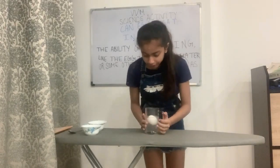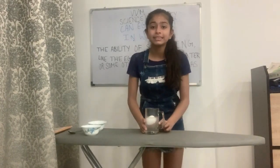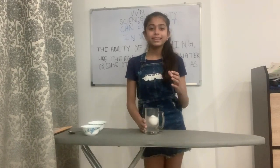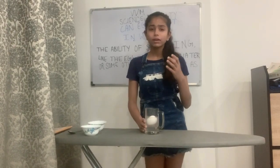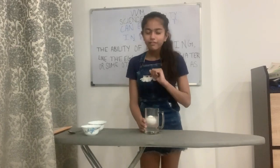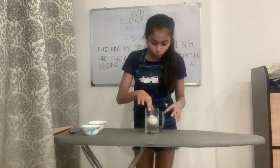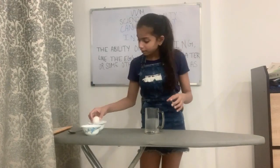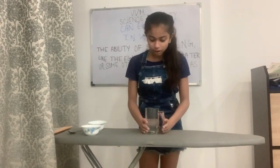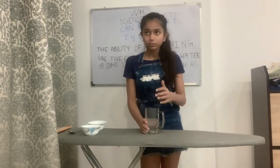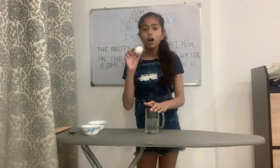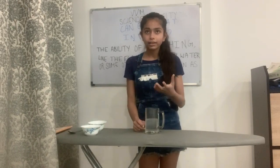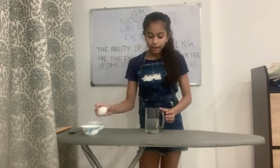Adding salt into the water increases the mass of the liquid without increasing the volume very much. Adding salt in the water also made the density of the water higher than the density of this egg. That is why the egg started floating.